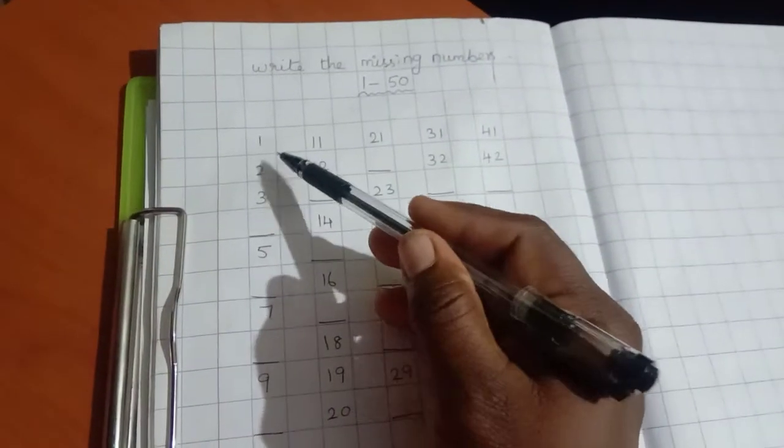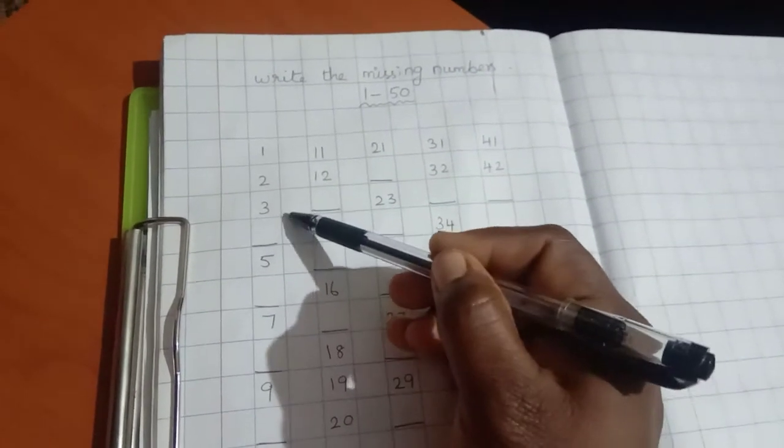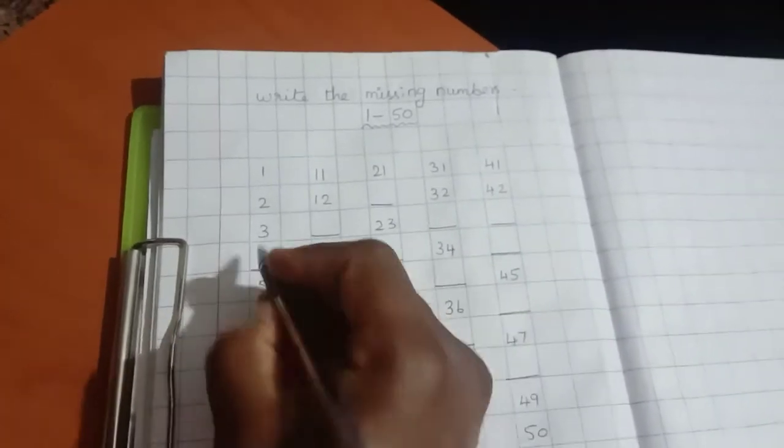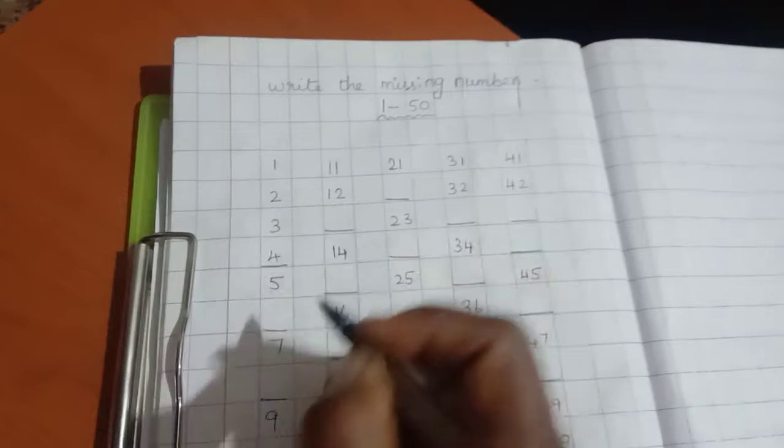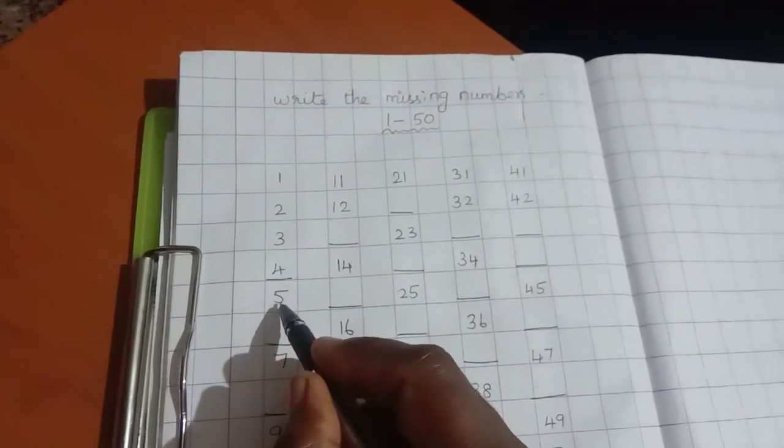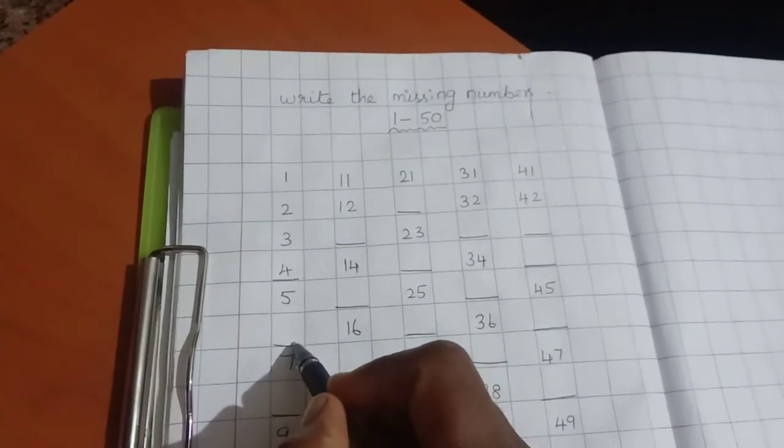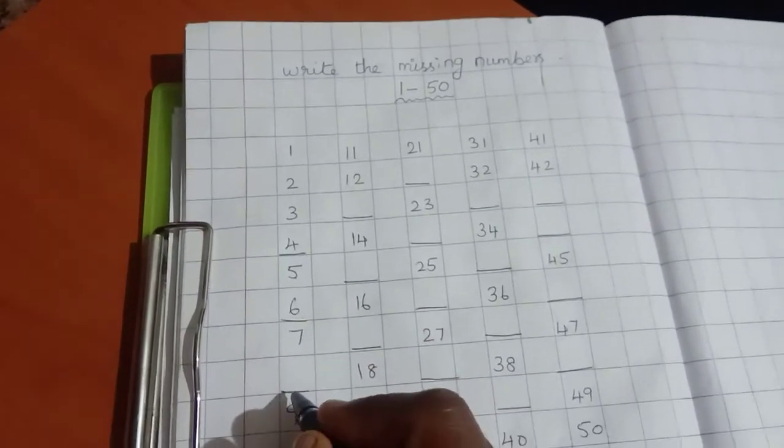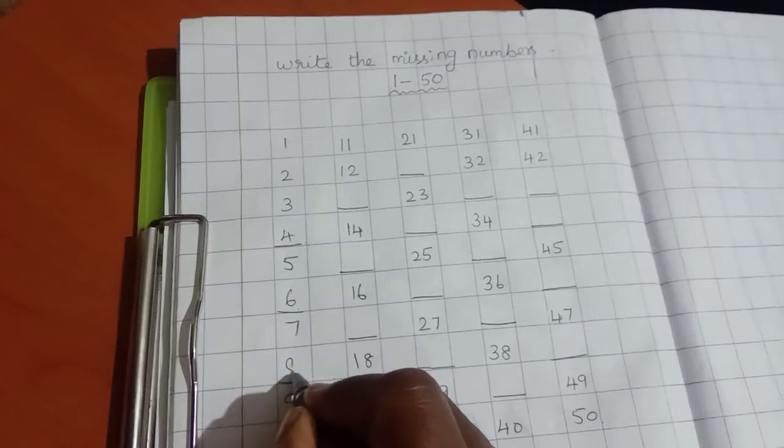First 1, 2, 3. So after 3 what will come? 4. After 5, what will come? 6. 6, 7. After 7 what will come? 8.